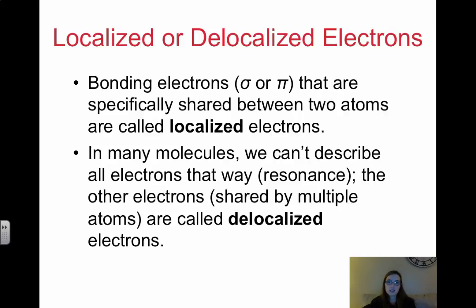So bonding electrons, which are the electrons that occur in a sigma or a pi bond, are the electrons that are specifically shared between two atoms, and these are localized. So if we have localized electrons, that means that they are specific to one bond. However, in many molecules, we can't describe all of the electrons that way. For example, if we have resonance structures. So when we have these resonance structures and our double bond can move, these are called delocalized electrons. So in a resonance structure, our double bond can move, which actually means that our electrons can move. This is called delocalized electrons.